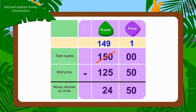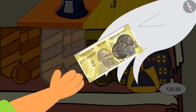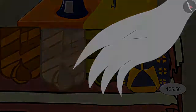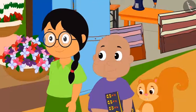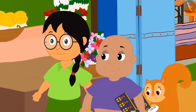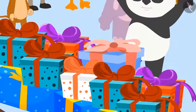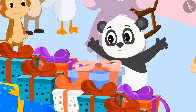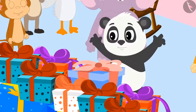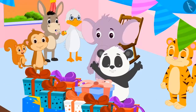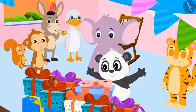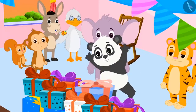In this way, Uncle will have to return them Rs. 24, 50 Paise. The Uncle returned Rs. 24.50 Paise. The three friends returned home excited with the shirt. The next day, when Golu saw his gifts on his birthday, he started dancing happily. All friends celebrated Golu's birthday in a grand manner.